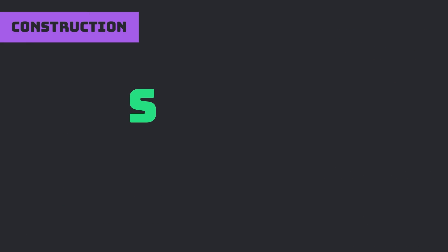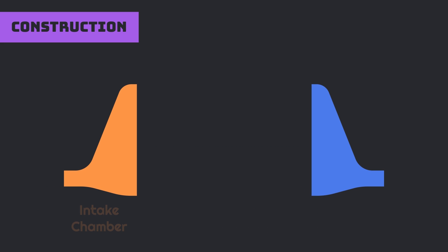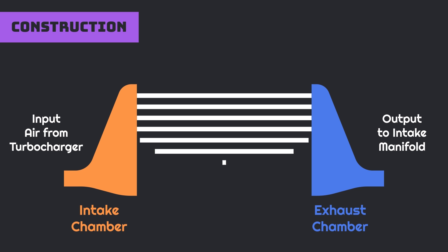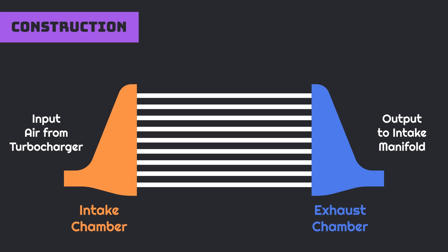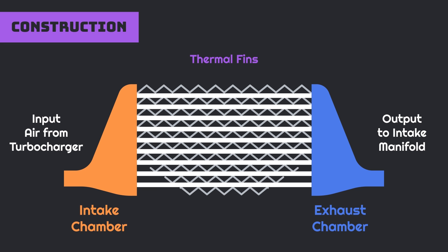Construction of intercooler is quite similar to the radiator. Intercooler consists of two main chambers: the first one is the intake chamber and the second one is the exhaust chamber. The intake chamber is connected with the turbocharger output, while the exhaust chamber advances to the intake manifold of the engine. Both chambers are interconnected with many highly thermally conductive excess tubes. To increase the heat exchange capacity of the intercooler, various thermal fins are provided between these tubes.